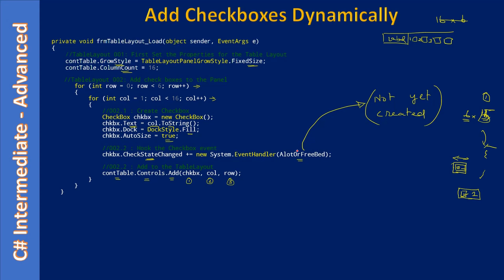In this video we will implement the allot or free bid feature. We are creating almost 15 by 6 check boxes, and all check boxes will produce the check state changed event. That event is handled by a single handler function. Inside the handler function we will find which check box is checked by the user — that's what we are going to do in this video.